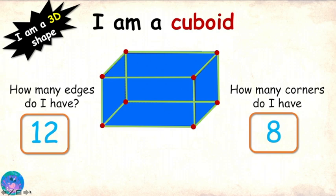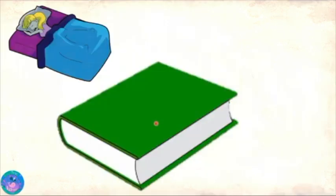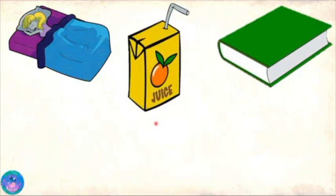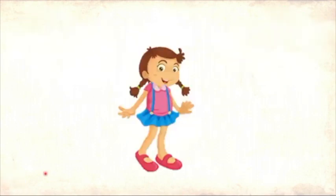Very good. Now, Zoe, you know me well. Can you identify some objects that have my shape? Of course. My bag. This book that I have to read. And this juice box that has my favorite orange juice. All of these are cuboids, or I can say that they are cuboidal. Awesome, Zoe. Now it's time for me to go. Bye-bye.